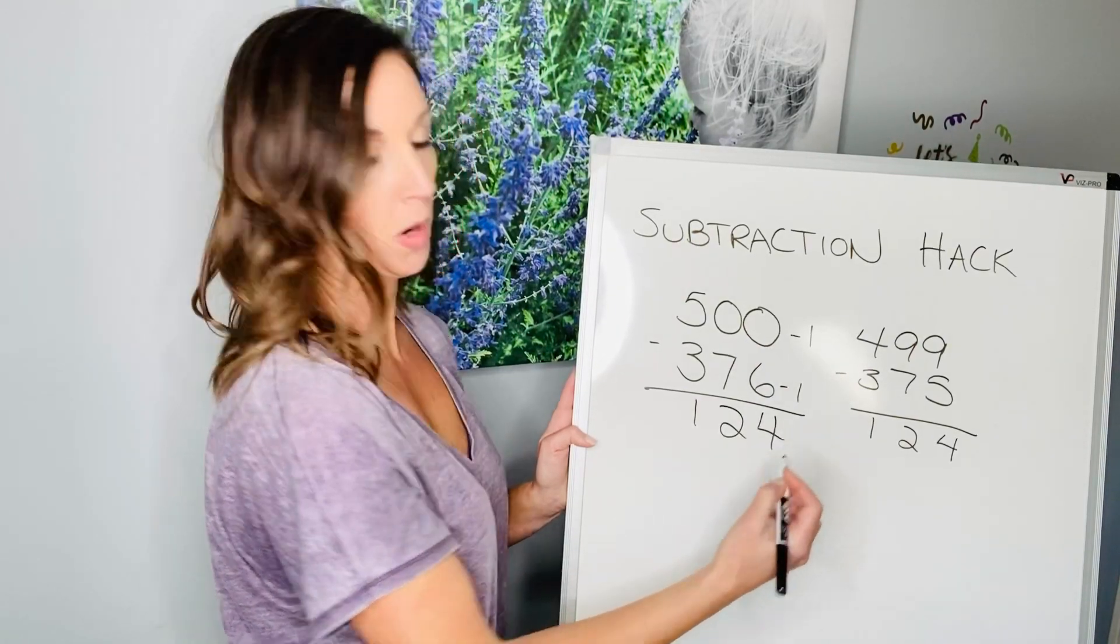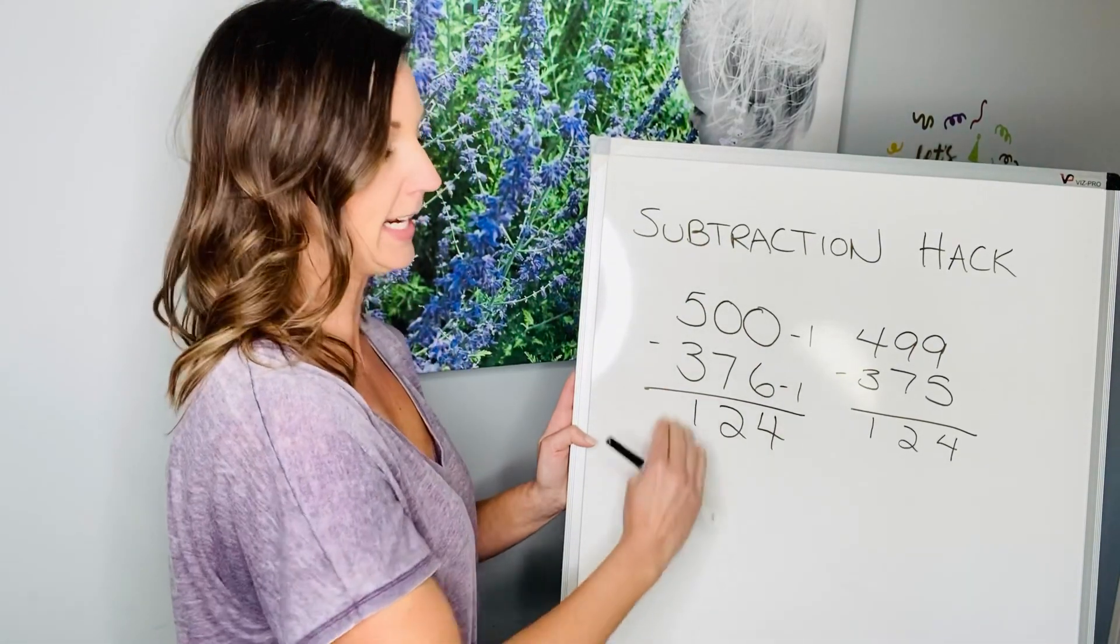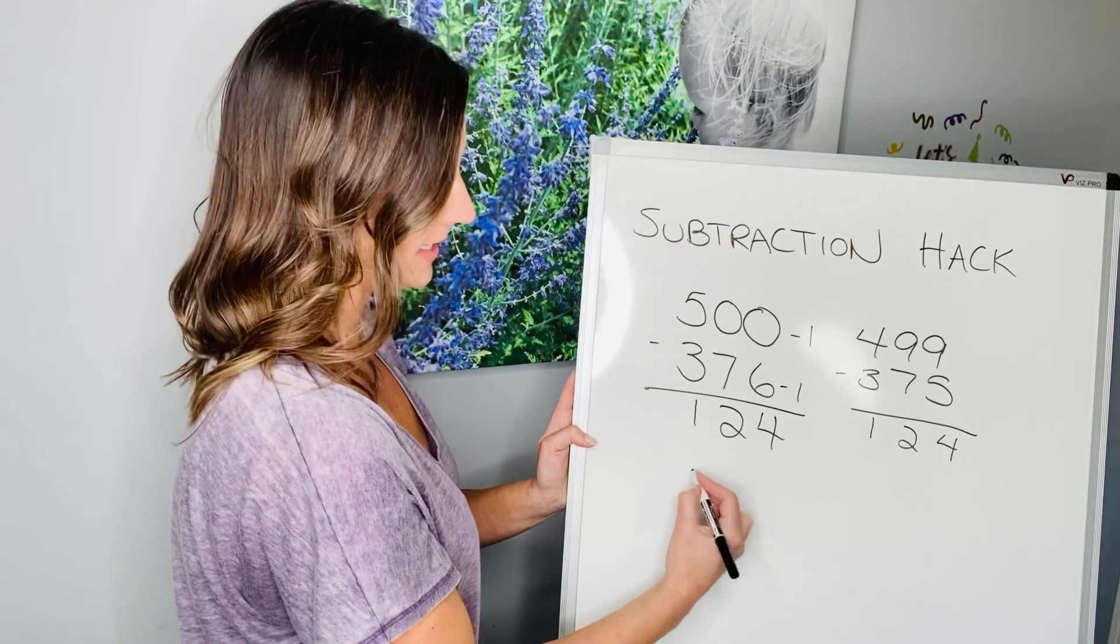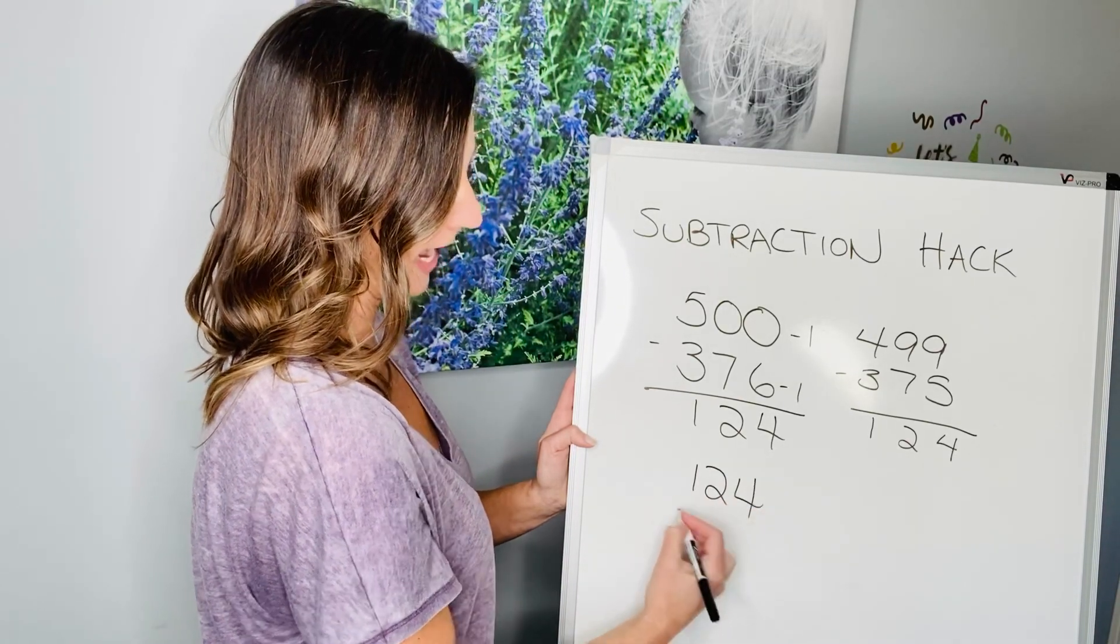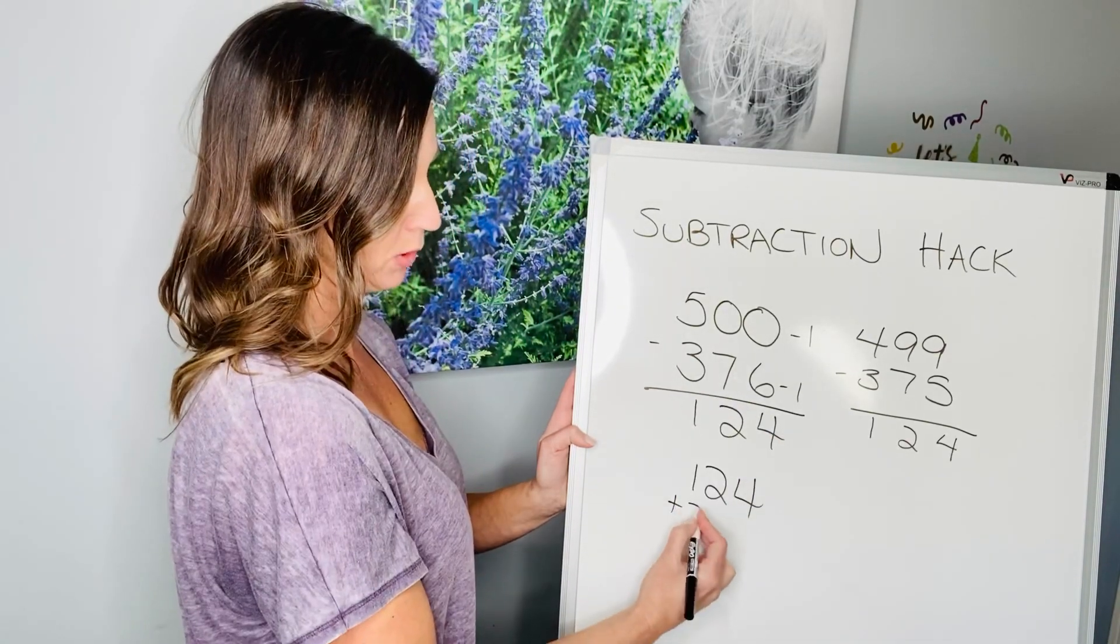When you have your answers, you always should check your work, right? So, you're going to take your difference that you got, 124, and you're going to add it to the number you subtracted by.